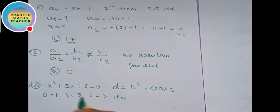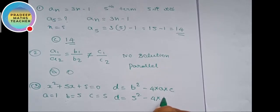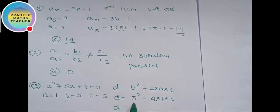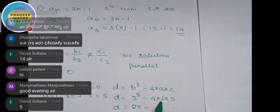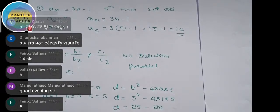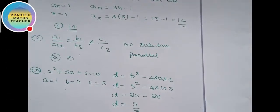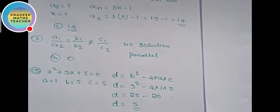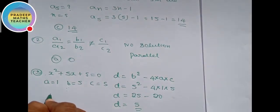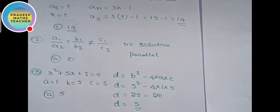D equals b squared minus 4ac. Here b is 5, so D equals 5 squared minus 4 into 1 into 5. That gives us 25 minus 20. So D equals 5. If the options are given, then option A is correct, which is 5.